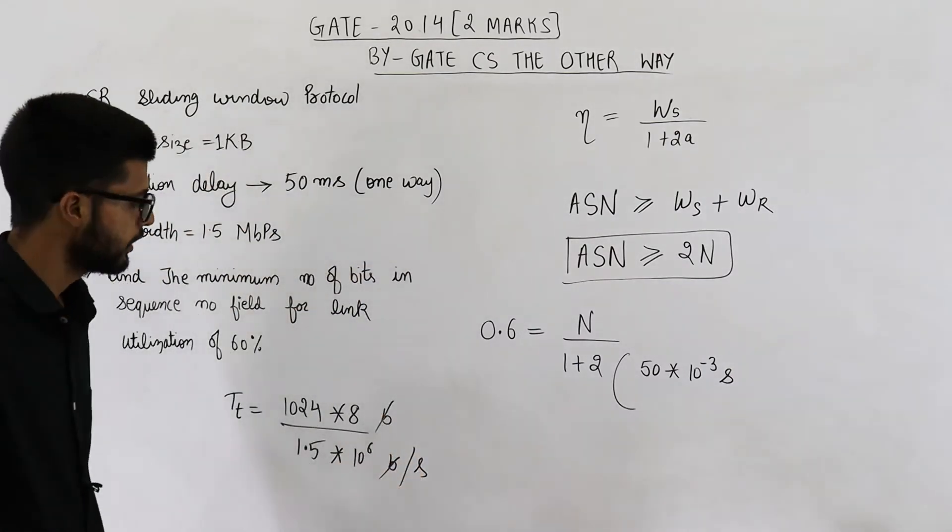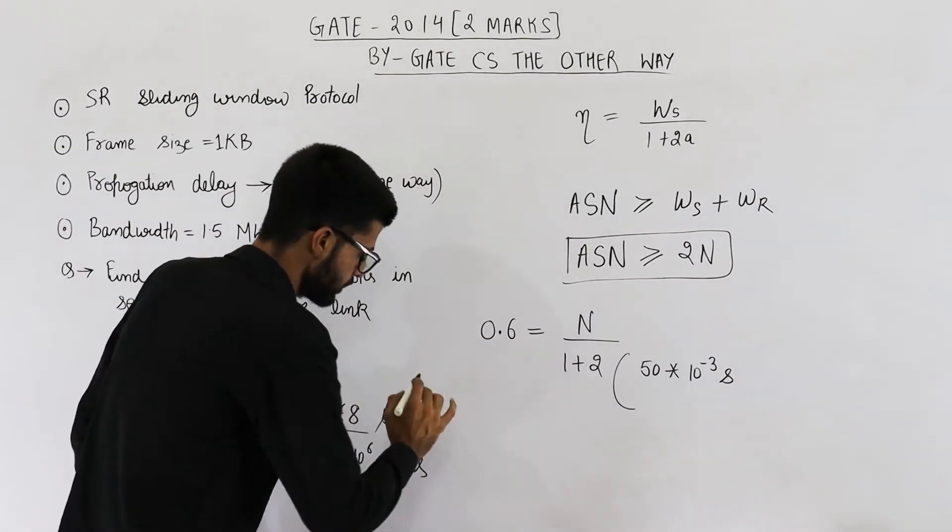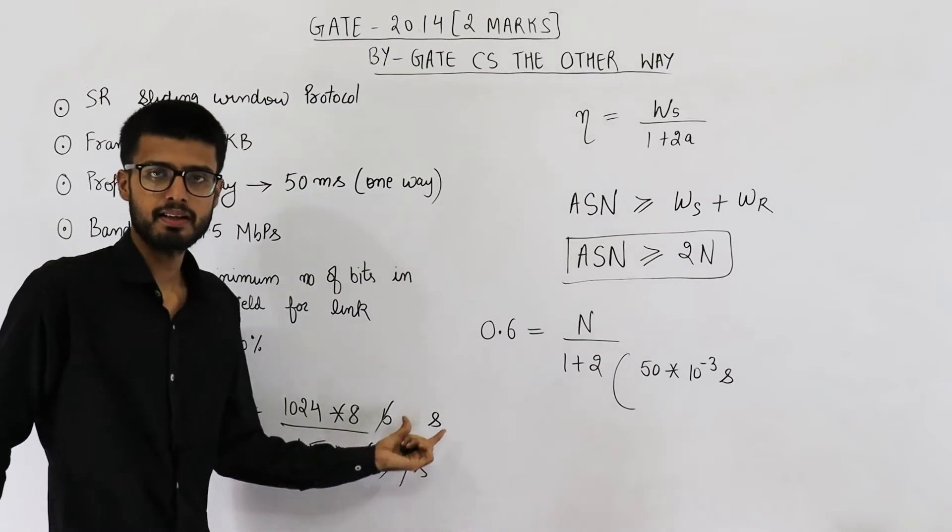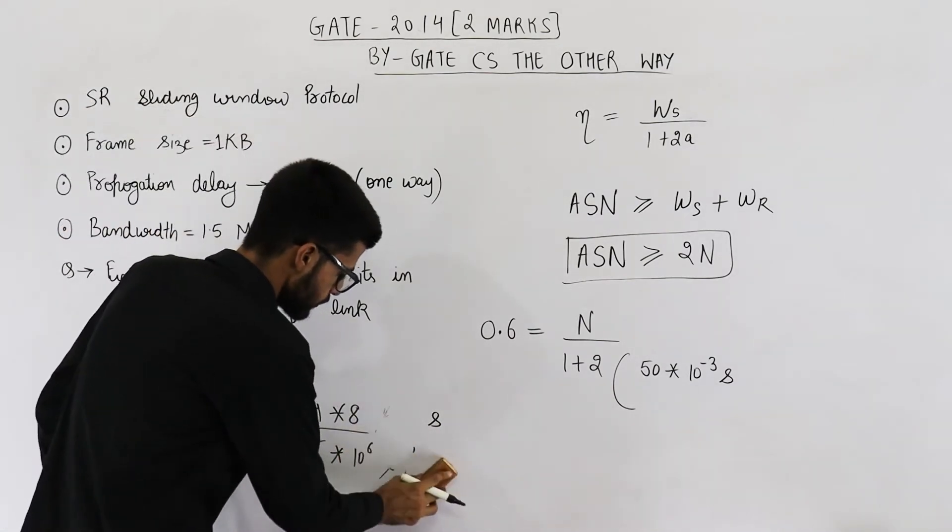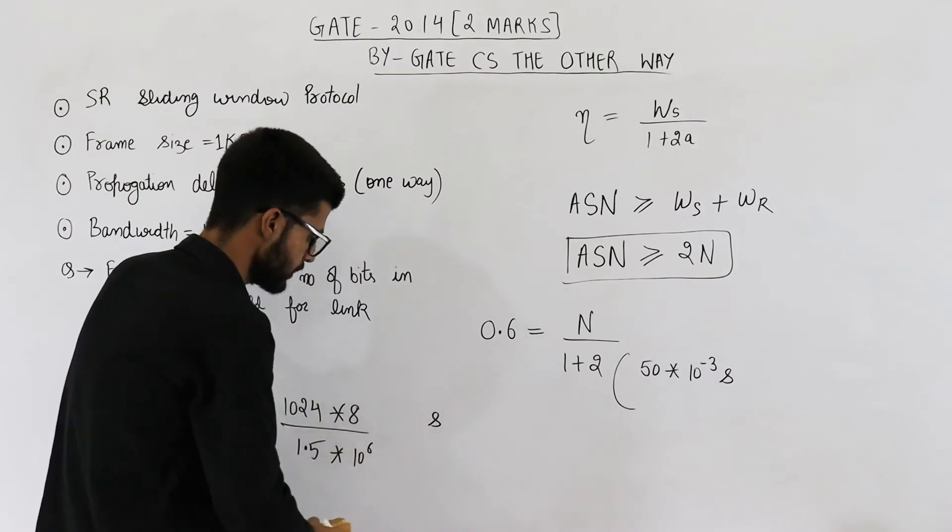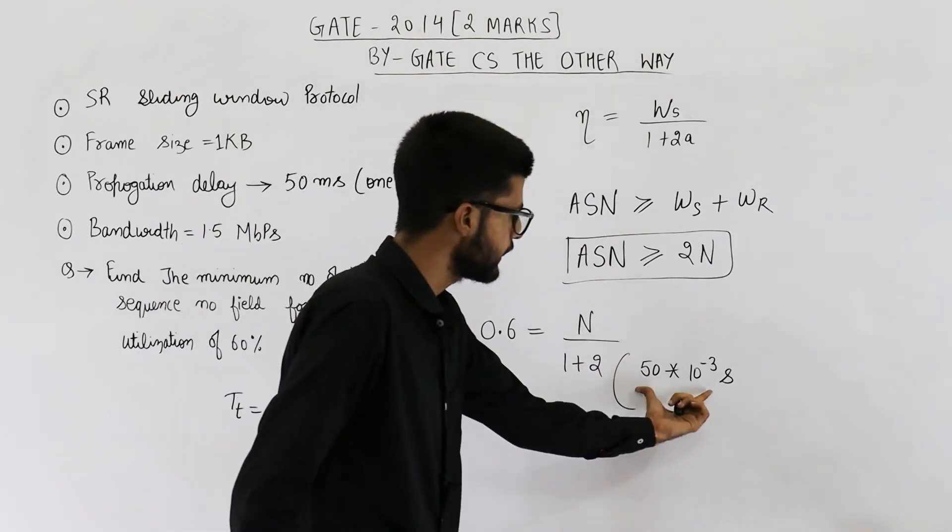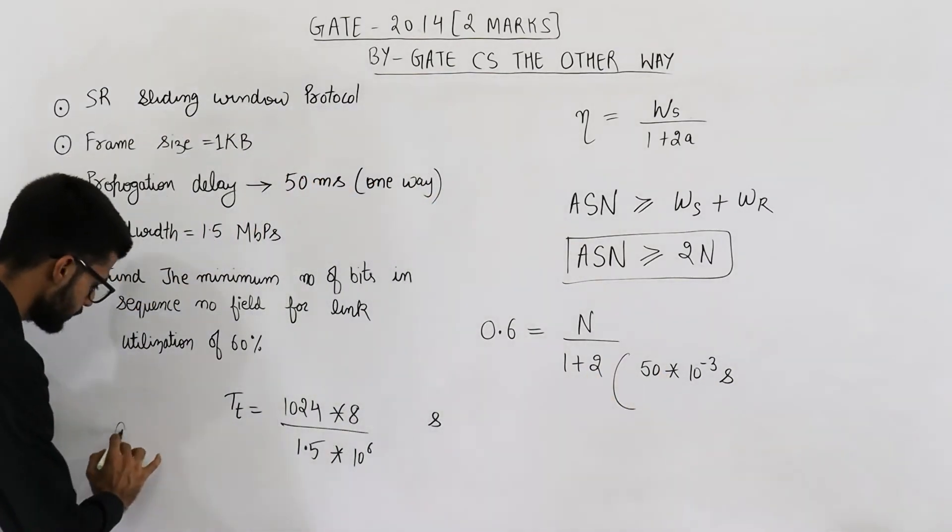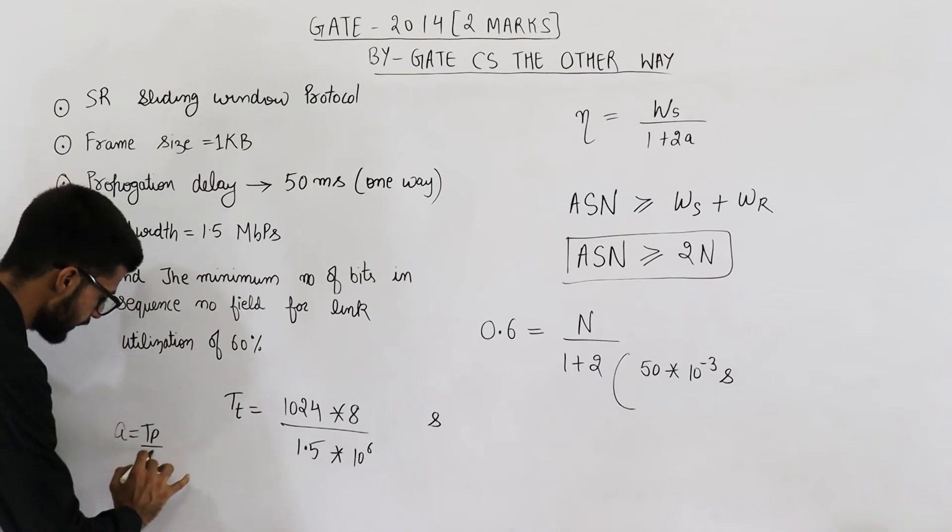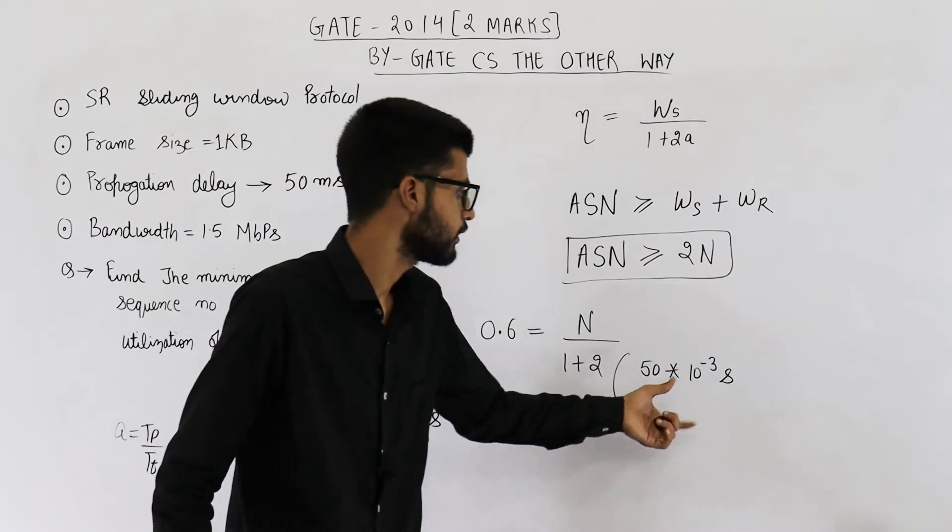These many bits per second. So bits and bits will get cancelled. And when this second is written in numerator, it will become second. So this much is the transmission delay. Now we need to divide tp by tt. See, a is propagation delay divided by the transmission delay. So let us substitute the value in this formula.